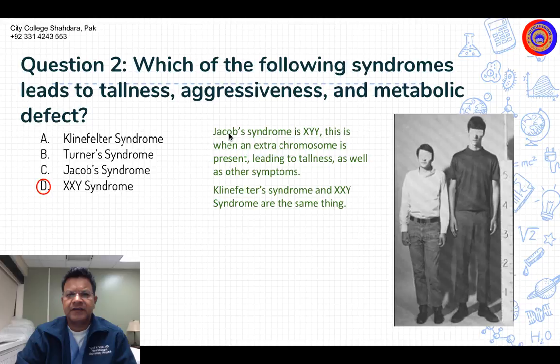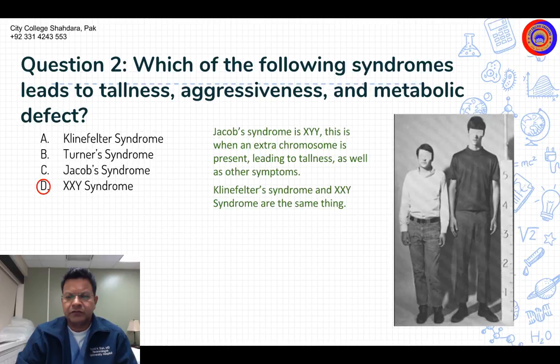Jacob syndrome is XYY — this is when an extra Y chromosome is present, leading to tallness as well as other symptoms. We also discussed XXY, in which an extra X chromosome is present.